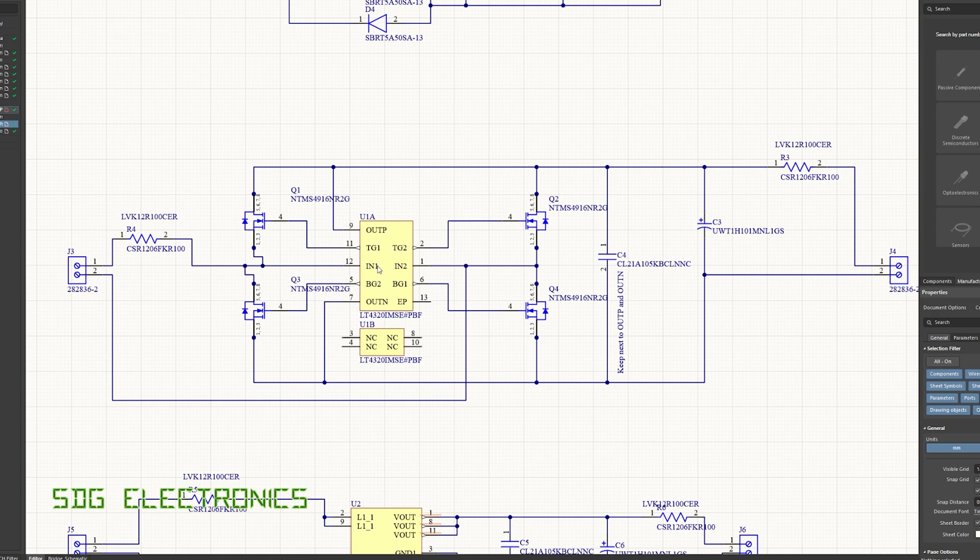However, once there is enough voltage for this chip to drive the gate on each of these MOSFETs, what happens is the MOSFET shorts out this diode and basically the only losses that we're seeing are the on resistance of each of these MOSFETs. Now I assume there probably are some losses as a result of the quiescent current of this LT4320. So let's take a look in the datasheet and see what that is.